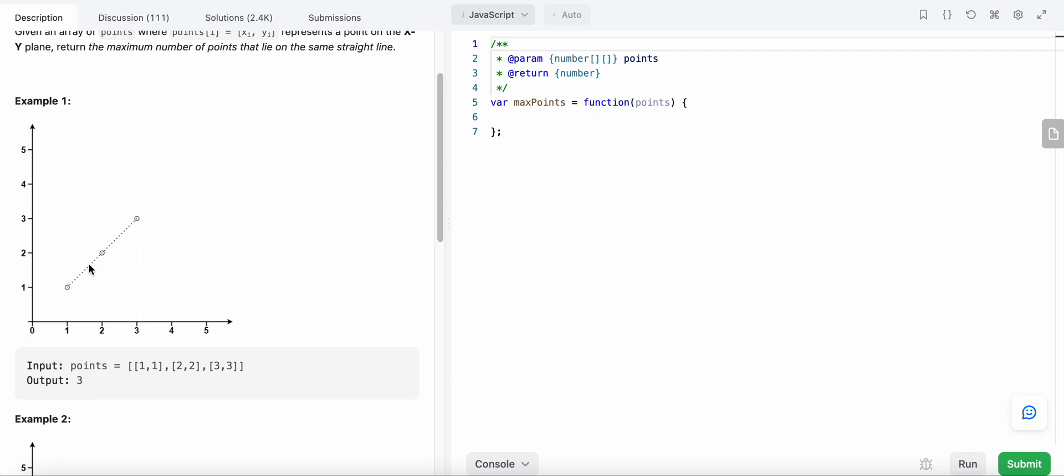This is the point (1,1), (2,2), and (3,3). We need to find the line with the maximum number of points - basically, the maximum number of points that lie on the same straight line.